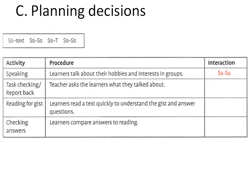The second activity: task checking report-back — teacher asks learners what they talked about. What interaction pattern is used here? That's students to teacher of course. Next, reading for gist: learners read a text quickly to understand the gist and answer questions. What interaction pattern is that? Students to text. Then checking answers: learners compare answers to the reading — students to students.